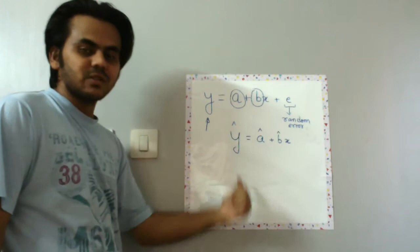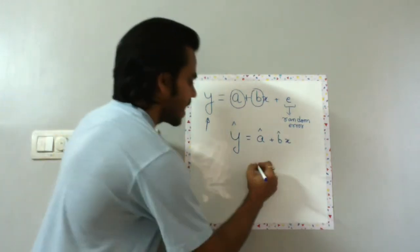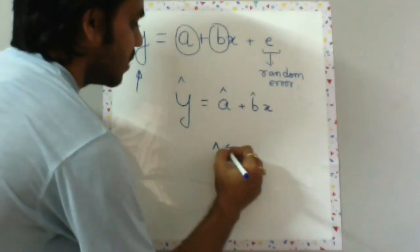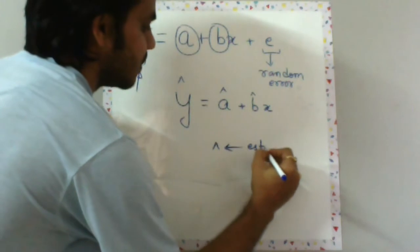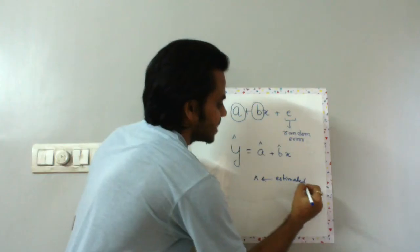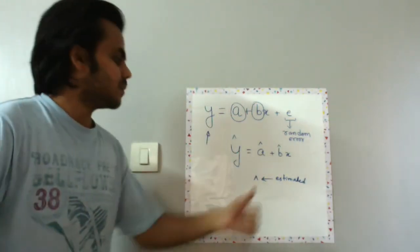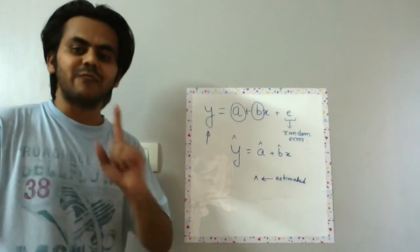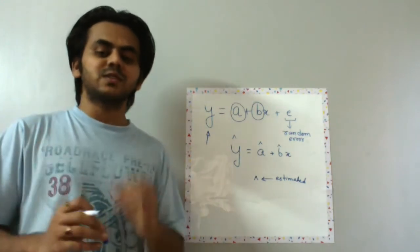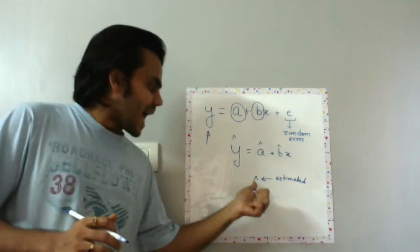So this guy 'hat' can also be known as estimated. Now this is just a mnemonic for you to remember why this hat is used. Wherever in econometrics you find a hat, it means it has been estimated by some kind of statistical means.